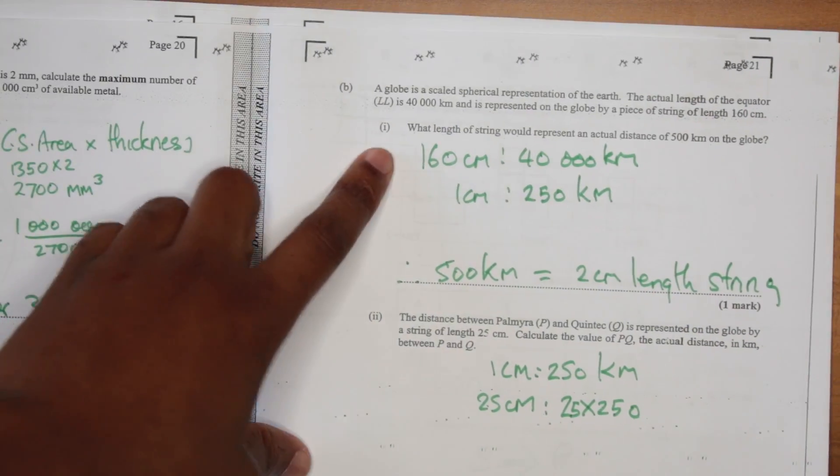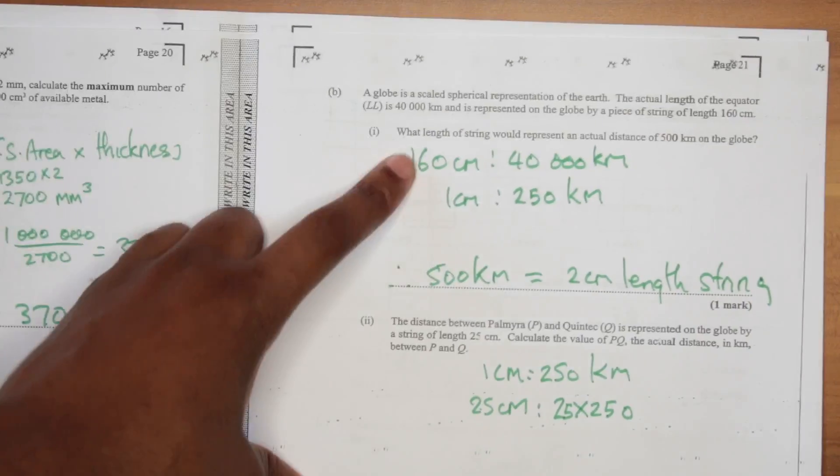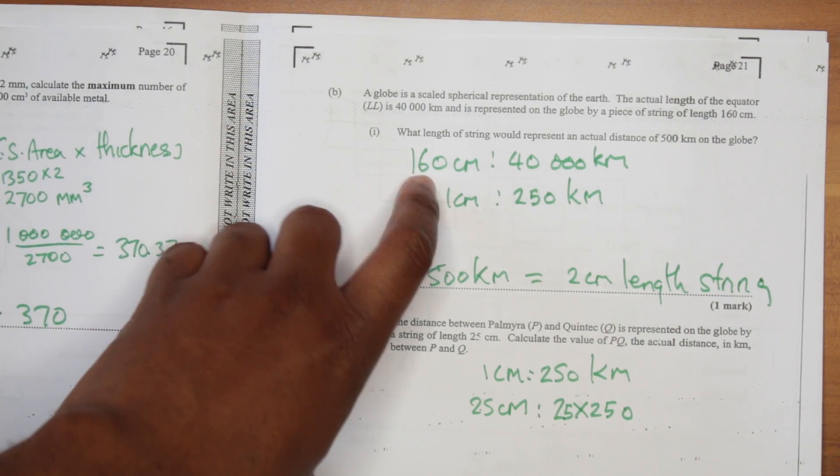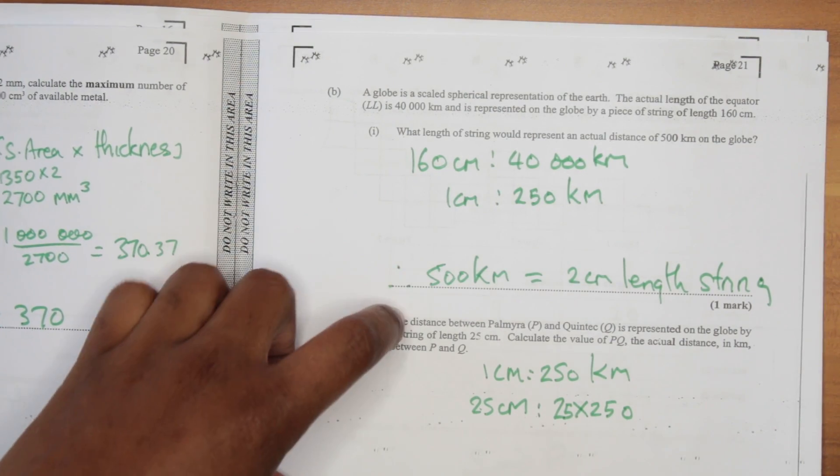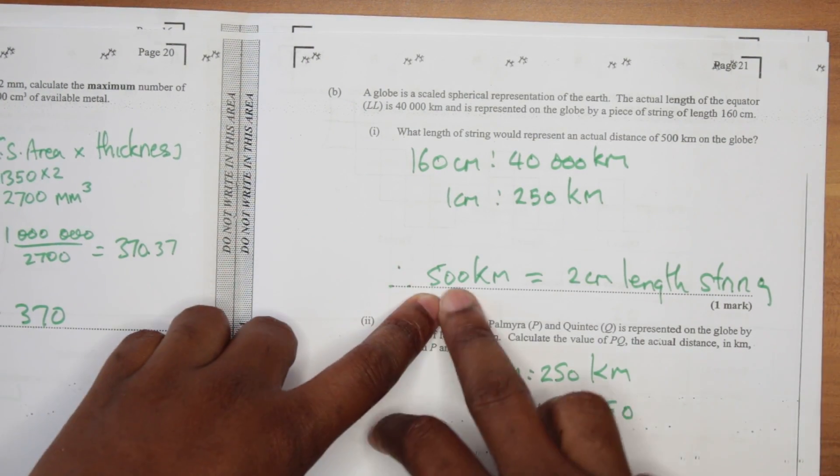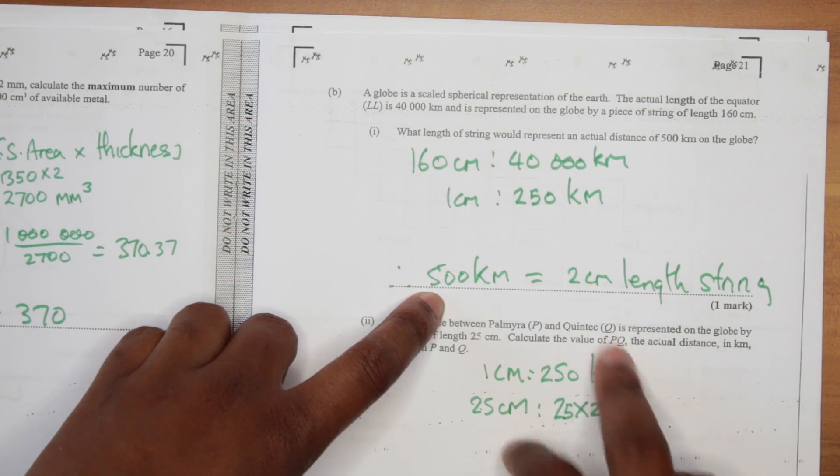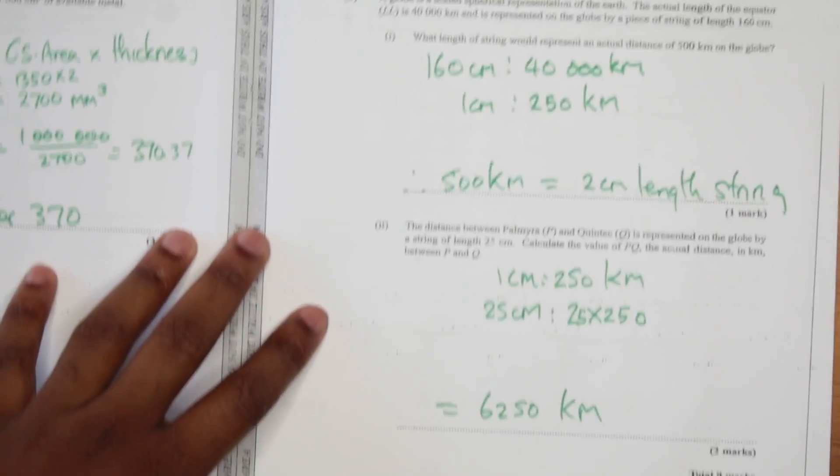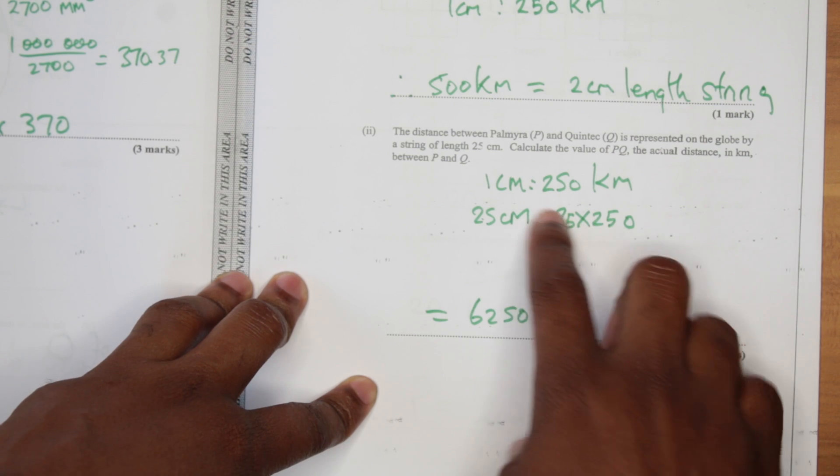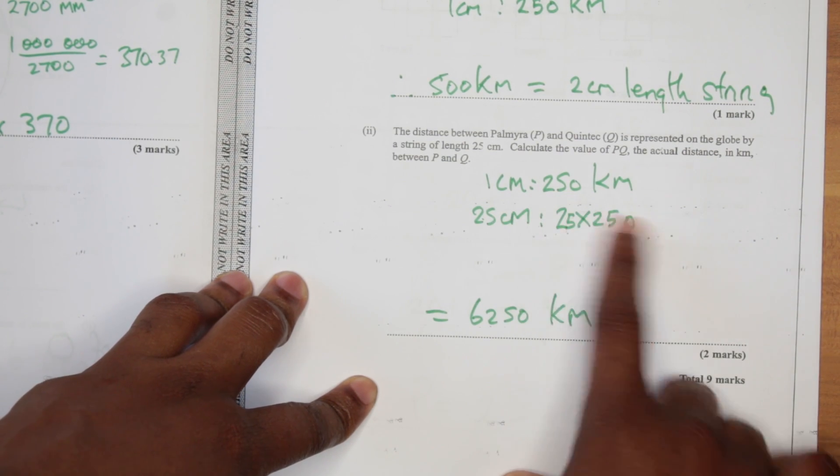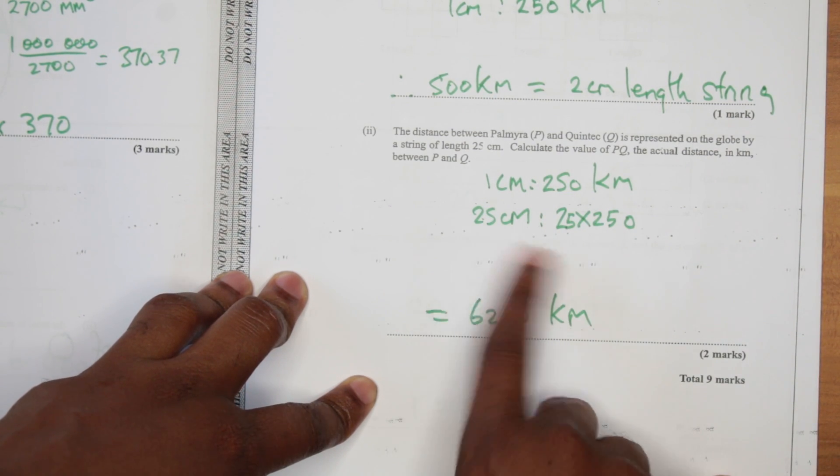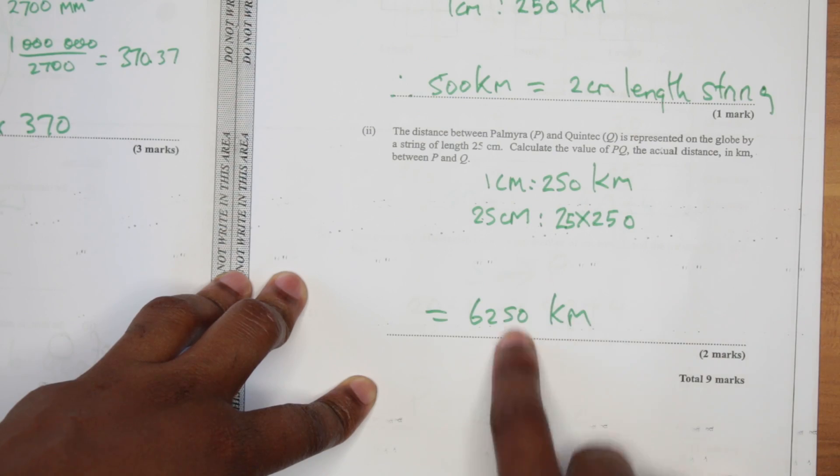Next up, we had a question that was looking real tough, but it was actually easy. The scales. 1 cm to that kilometers. So in the end, you'll end up with 500 km was equal to 2 cm. The working is there. Remember, you could always pause. I'm kind of speeding. And when you establish this 1 cm to 250 kilometers scale, you could actually work out the 25 cm. It's going to be that.